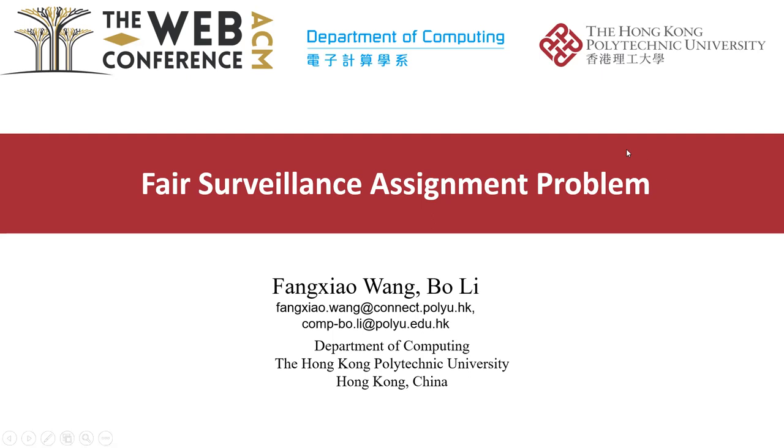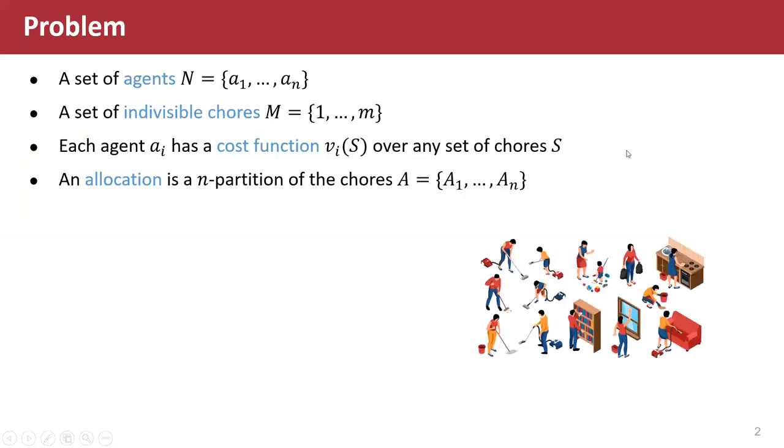This paper is about fair allocation. Here we are given a set of agents N = {a₁, ..., aₙ}, a set of indivisible chores M = {1, ..., m}, each agent aᵢ has a cost function vᵢ(S) over any set of chores S, and an allocation is an n-partition of the chores A = {A₁, ..., Aₙ}.